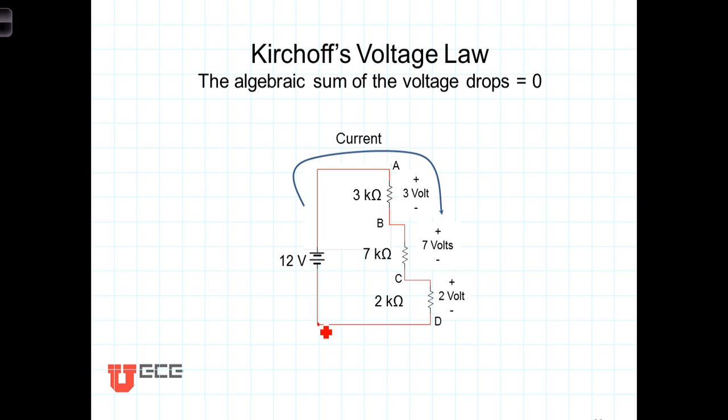So for example, if we start here and we add up the voltage drops we experience as we come around this closed loop, the sum of all those drops has to equal zero. So if a drop is a positive value, an increase is going to be a negative value.